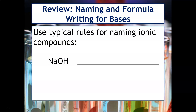For example, you just read whatever you see first and whatever you see second. We see sodium, so we would write sodium. The OH, if you look on your polyatomic ion sheet, is called hydroxide. So this is called sodium hydroxide.